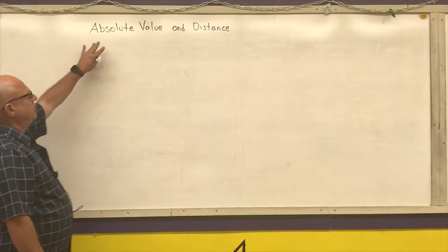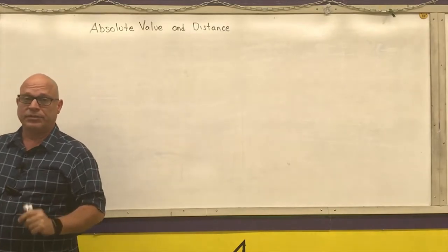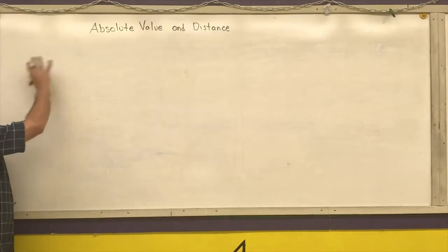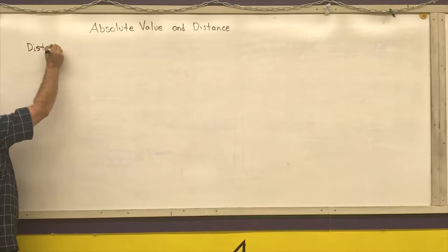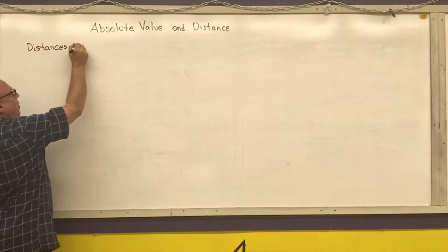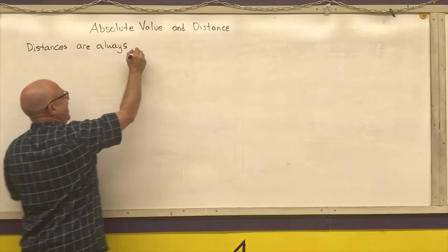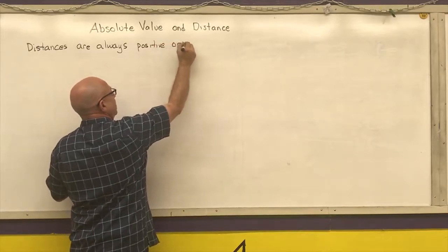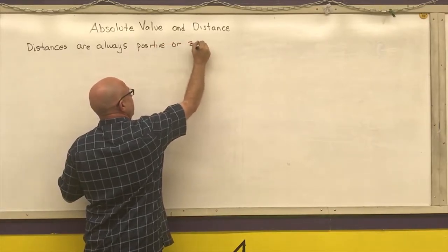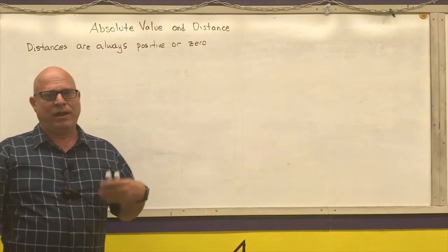We're going to talk about absolute values and distances between numbers on number lines. And before we do the major work here, I want to state that distances are always positive or zero. So how far I am away from something will never be a negative number.